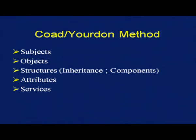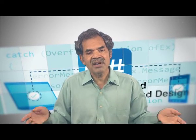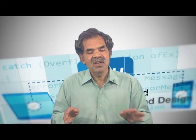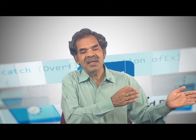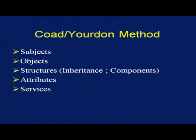In the Coad-Yourdon method, they talked about subjects, objects, structures, attributes, and services. Please understand that the moment we talk about each method, it is not only the notations but also the vocabulary — the terms they use are completely different for each method. We could end up in chaos very soon; nobody would understand anybody else. They were called method wars. Please look at those few standard terms which you should map each time — what is a method unless it is adhering to this standard?